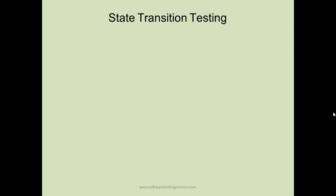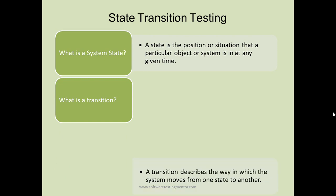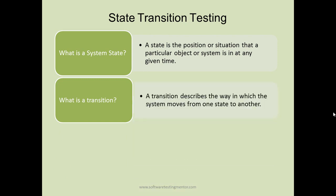What is a system state? A state is the position or situation that a particular object or system is in at a particular time. For example, if your car is standing and not moving, it's in a stationary state. Once you start the engine, apply the gear, and accelerate, it starts moving.